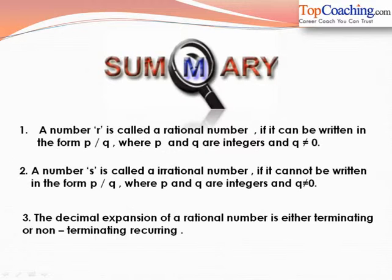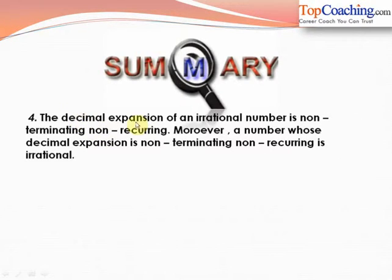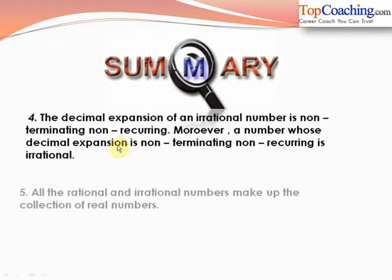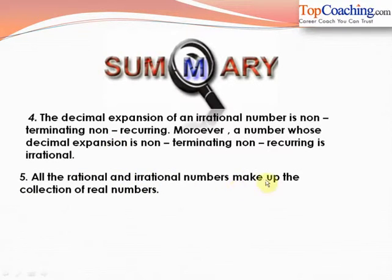The decimal expansion of a rational number is either terminating or non-terminating recurring. The decimal expansion of an irrational number is non-terminating and non-recurring — any number whose decimal expansion is non-terminating non-recurring is an irrational number. All the rational and irrational numbers together make up the collection of real numbers.